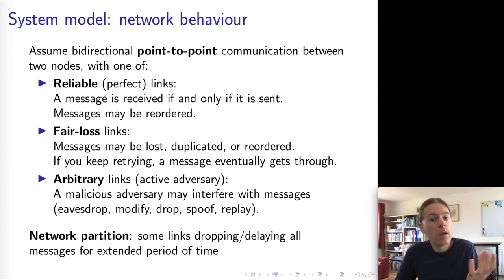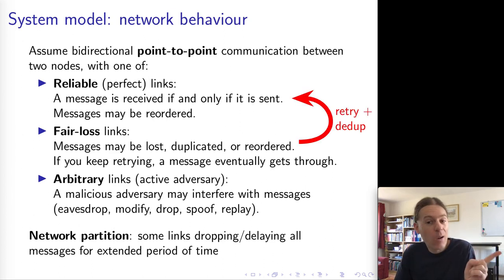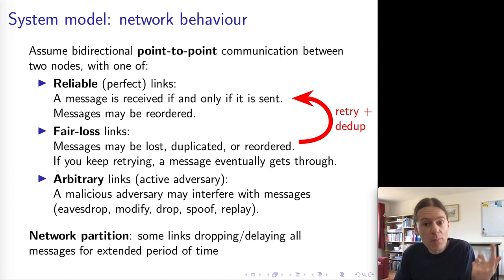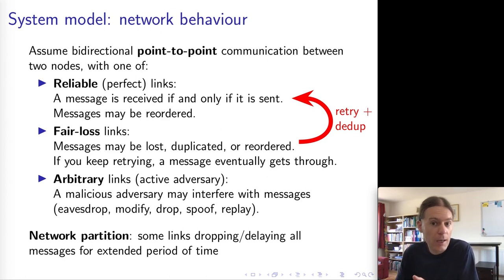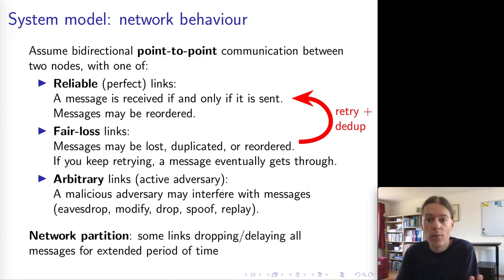Interestingly, it's almost possible to convert one network model into another. In particular, if we have a fair loss link, we can turn it into a reliable link by simply retrying messages until they get through. On the recipient side, we might get duplicate messages, so we also have to deduplicate. Because a fair loss link guarantees that if we keep retrying a message will eventually get through, we can actually turn this into a reliable link — though we say nothing about how long that might take.